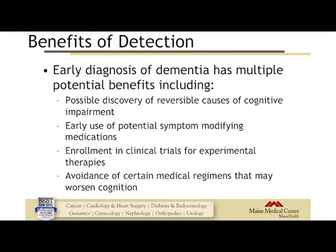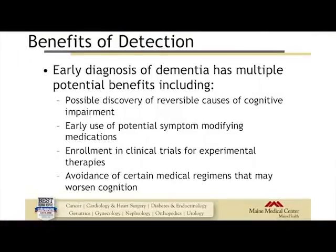If we don't recognize that somebody is having an issue, how do we treat it, discuss it, or think about safety implications? There are multiple benefits of early detection of dementia, including discovery of reversible causes — a patient whose sodium is 119, or who has hypercalcemia, or who fell on a blood thinner and may have a subdural. There are real reversible causes to cognitive impairment that detection helps identify. There's also early use of potential symptom-modifying medications and enrollment in clinical trials.